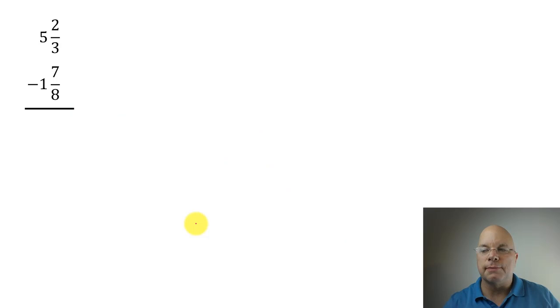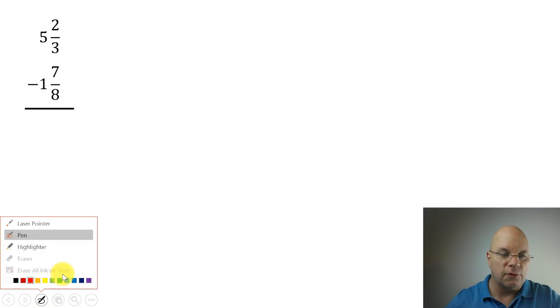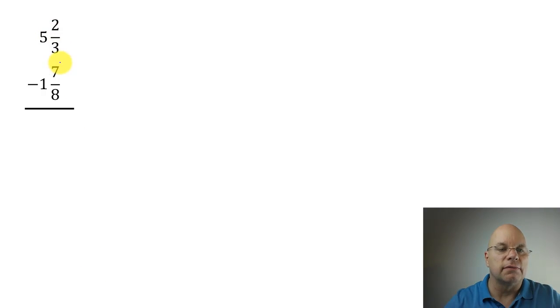Let's look at another example here. This time I've already set it up in the vertical format. But again, we don't have like terms. We have thirds and eighths. Thirds and eighths can both become 24ths. So 2/3 multiplied by 8/8 is equal to 16/24. I'm going to substitute 5 and 2/3 for 5 and 16/24.